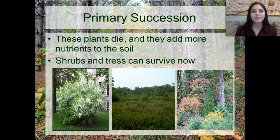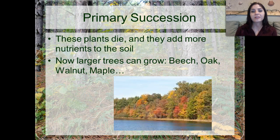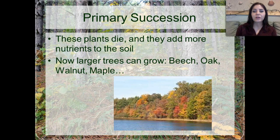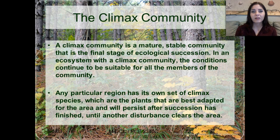Those plants begin to die out and add more nutrients to the soil, so now we have shrubs and little tree seedlings starting to grow. More insects, birds, and mammals have begun to move into this environment, and what was once bare rock now supports a variety of life. As plants and animals die, they add more and more nutrients to the soil, allowing larger trees — beech, oak, maple, walnut — to grow to full maturity. Eventually we form a climax community.